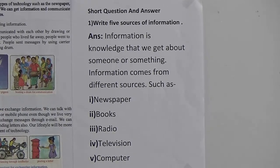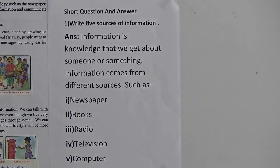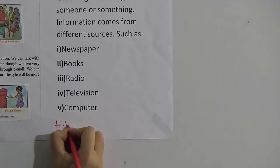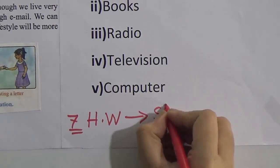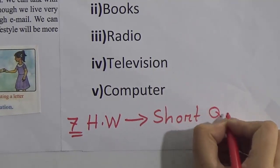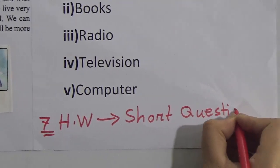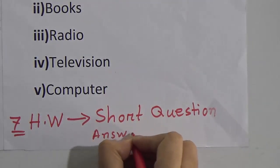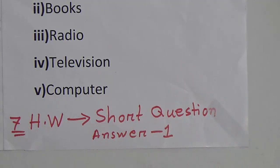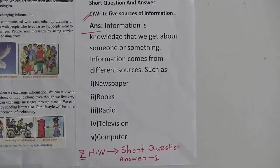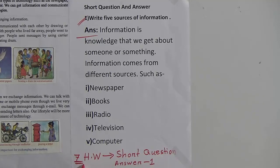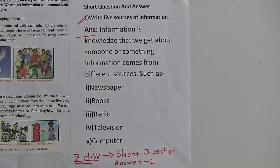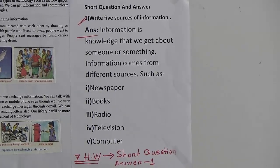Dear students, you have to do some SW. This is your number 7 SW, and your SW will be a short question answer — just one short question answer. You have to write this as your SW. Remember, this is SW number 7. When you write your SW, you have to write the number 7 at the top of your SW copy.